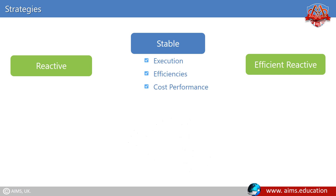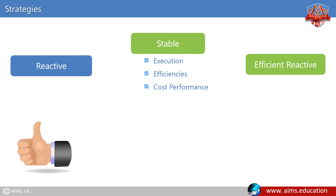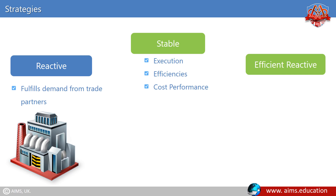The reactive supply chain strategy works well when the chain acts to fulfill demand from trade partners. For example, a manufacturer of sports team apparel for fans — when a team makes it to the next round, more products are needed; however, for the losing team, demand virtually disappears.